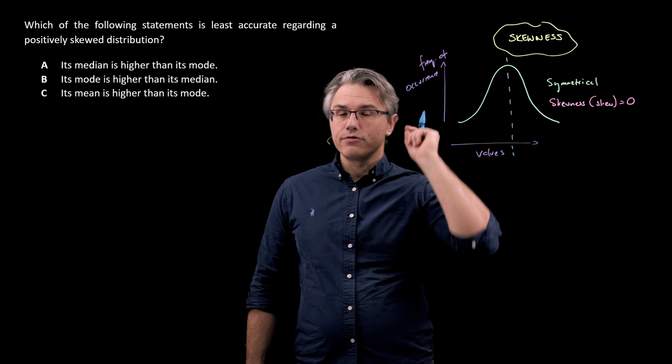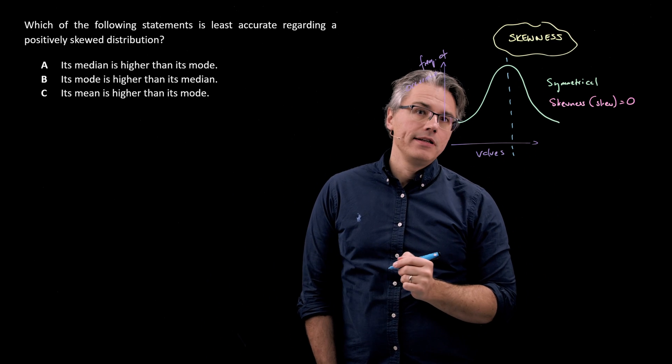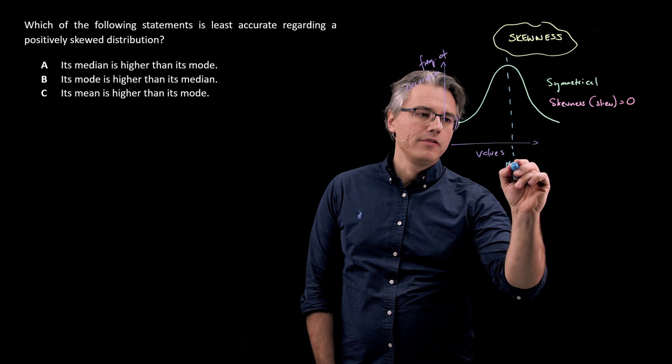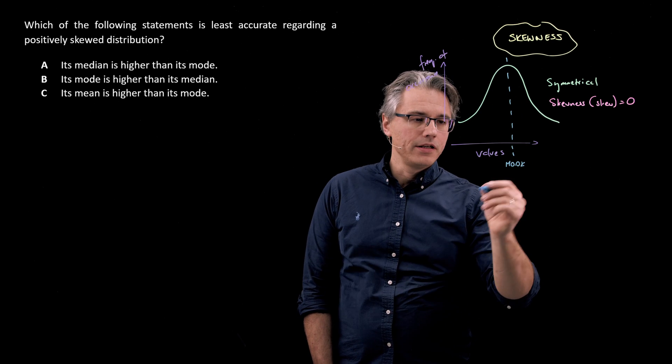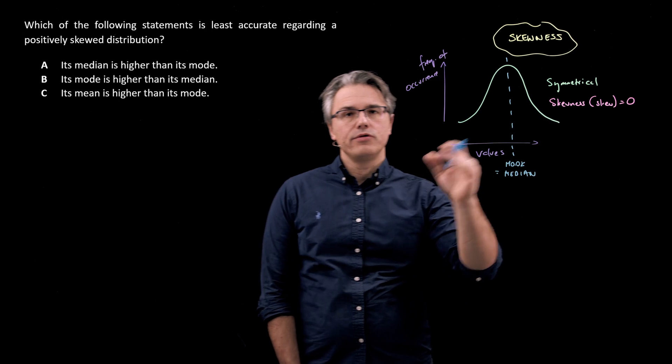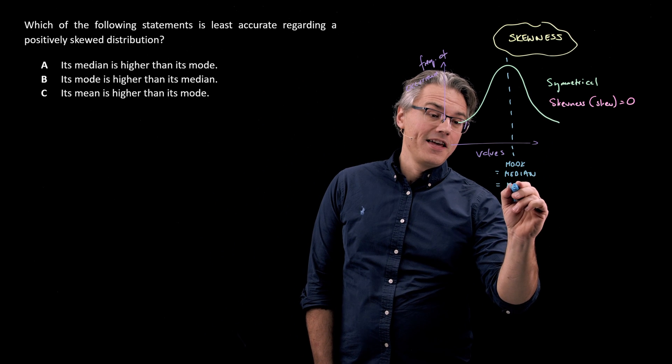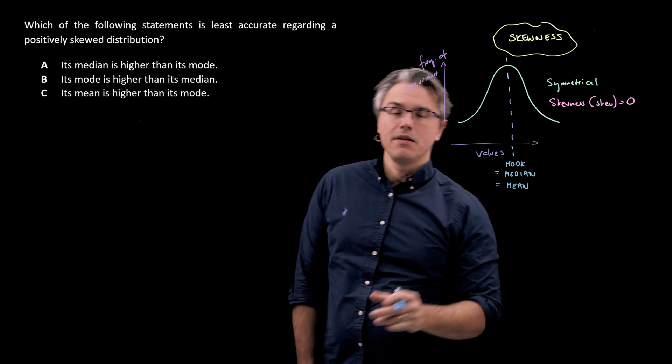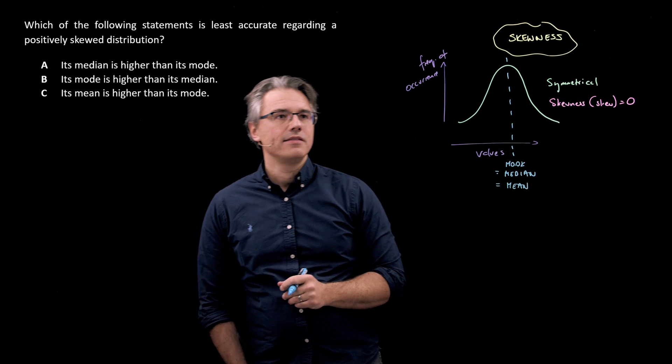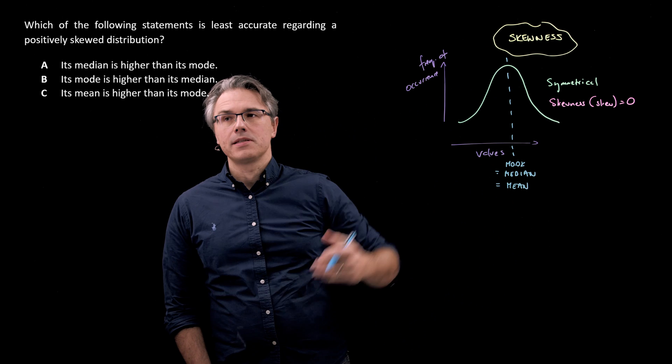And for a symmetrical distribution, what you're going to find is that its most frequently occurring item, the mode, sits right in the middle here, and that is the same as the median, which is the value which divides this distribution into two equal halves, and it's also the same as the mean. So all three measures of central tendency are in exactly the same place, right here, smack in the middle.